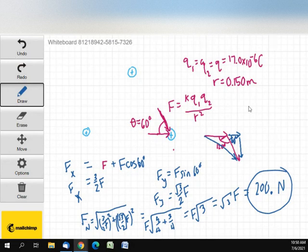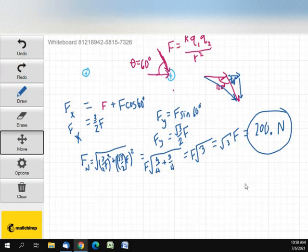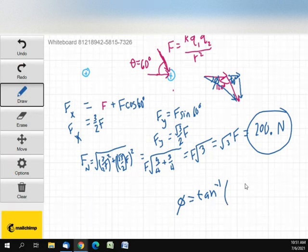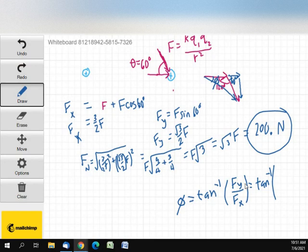Now, the direction. We need the direction as well. If I call this angle right here, phi, then phi will be the inverse tangent of F sub Y over F sub X, which is going to be the inverse tangent. F sub Y is square root of three over two F. F of X is three over two F.